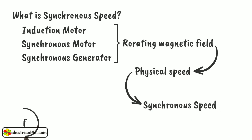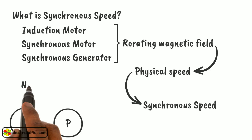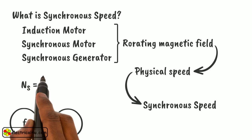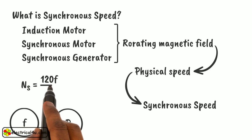It depends upon supply frequency and number of poles in the stator. The equation of the Synchronous Speed is given as Ns equals 120f by p, where f is frequency, p is number of poles, and Ns is Synchronous Speed in RPM.